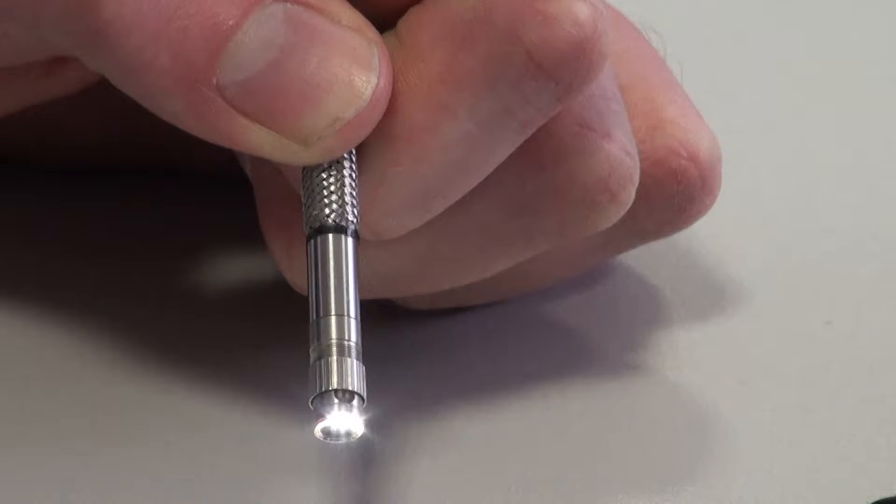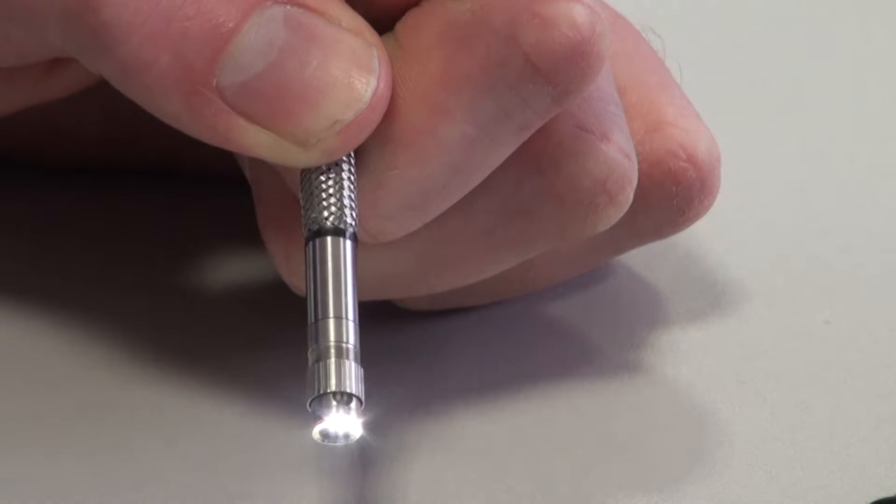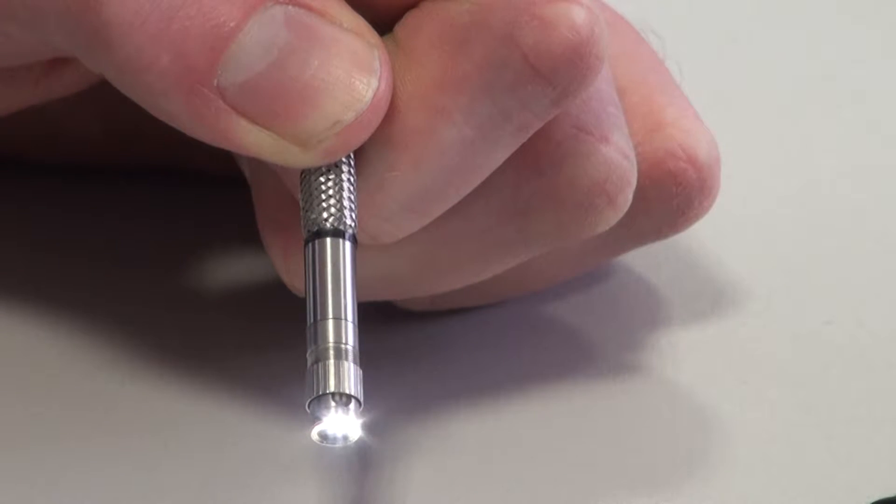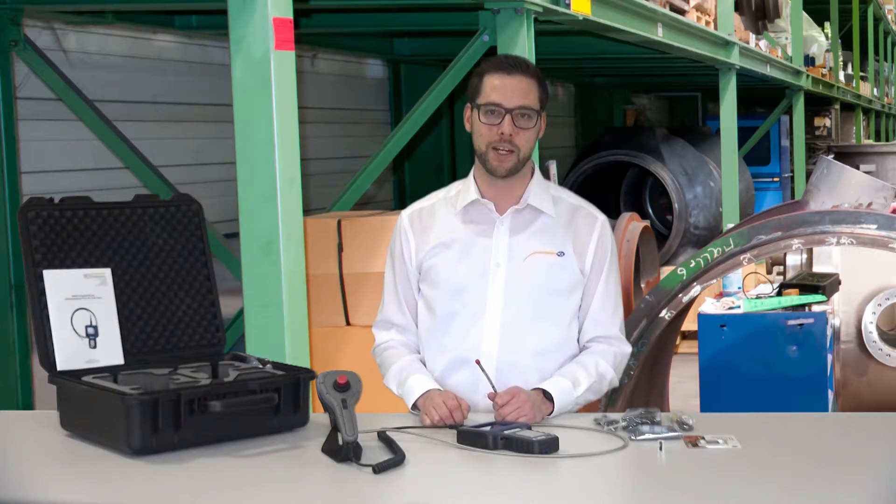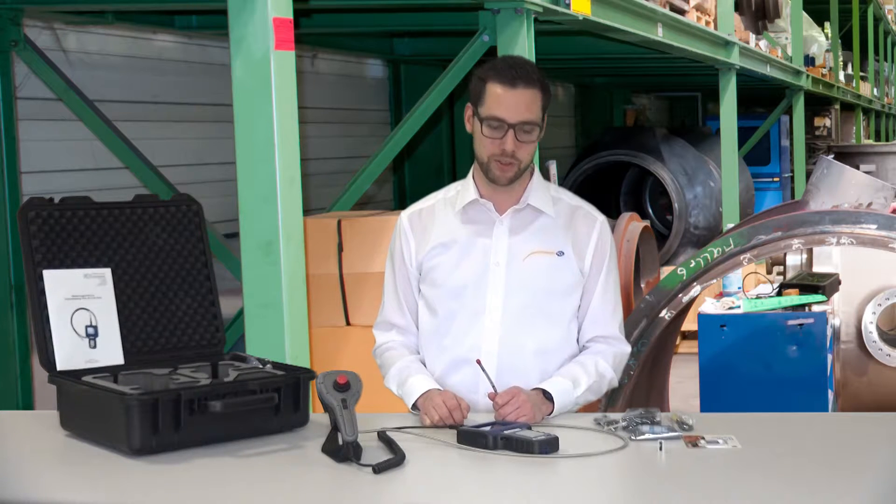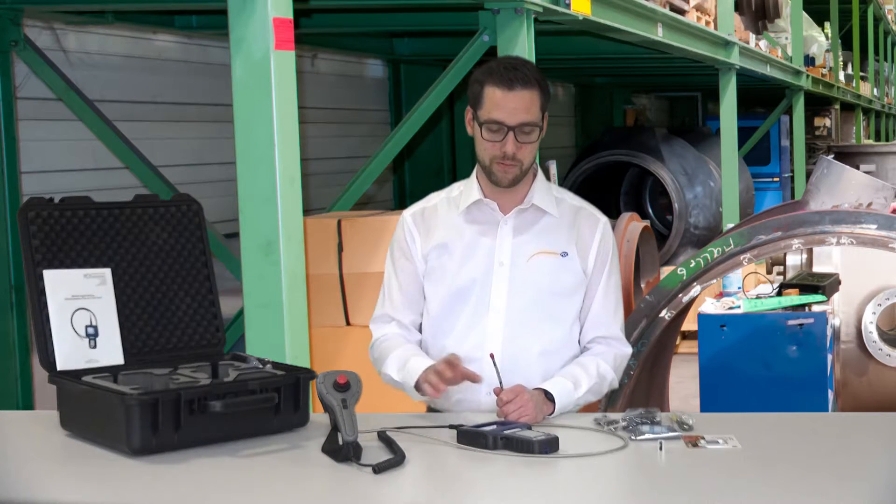The endoscope has an integrated lighting. We have at the front 4 LEDs and 2 LEDs at the side. The head and camera's diameter are 6mm and you can move it in different directions. The screen of the endoscope handset has a size of 3.5 inch, has a mini USB connection and also an AV out connection, as well as a connection for a memory card. The power supply of the handset is through an integrated 3.7V lithium-ion battery.